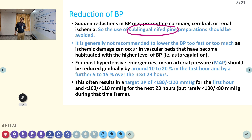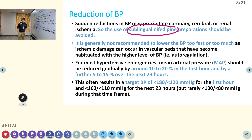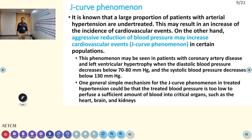For example, if systolic is 200 mmHg, by the next day you reduce only 40 percent — bringing it to around 140. The target BP may be around 180/120 in the first hour, then 160/110 in the next 23 hours, so that over 24 hours it reaches around 130/80 to 100. Sudden excessive reduction can damage the internal circulation.